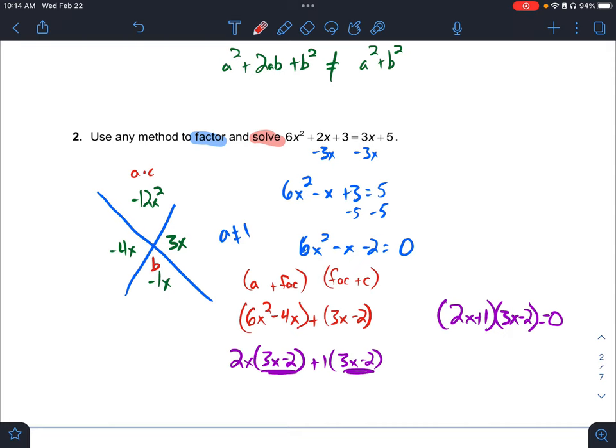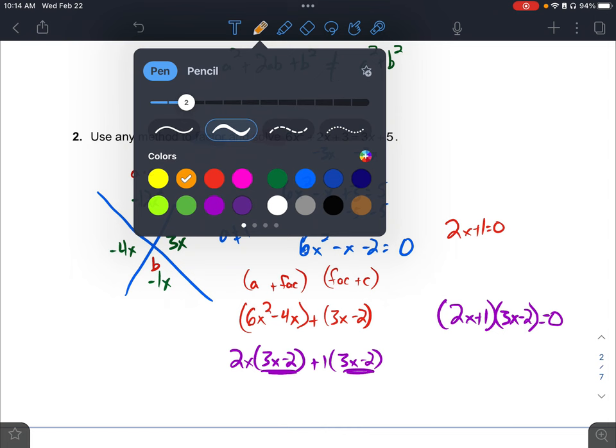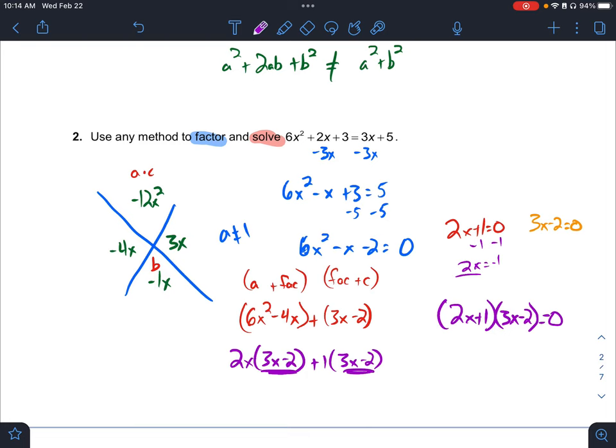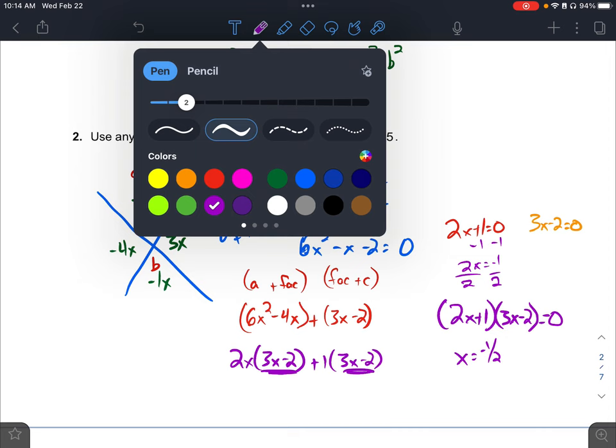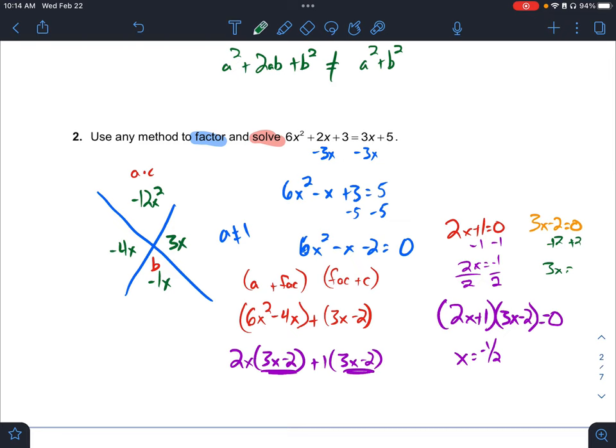Set up both cases because we are also solving this. So I have 2x plus 1 equal to 0. I have 3x minus 2 equal to 0. And then we're just solving. So minus 1, minus 1, 2x equals negative 1. Divide 2. x equals negative 1 half. And the same here with this one. Add 2, add 2. 3x is equal to 2. Divide 3, divide 3. x is 2 thirds.